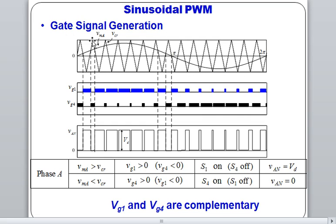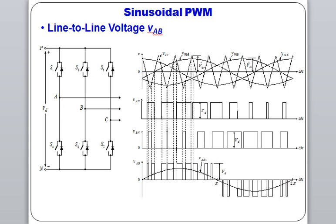For a particular leg, suppose leg 1, there are thyristors: thyristor 1 and thyristor 4, and their gating signals are complementary. We can relate this to phase A, giving VAN. Similarly for phase B and phase C, we trigger the appropriate gate signals to the appropriate thyristors. Phase A uses S1 and S4, phase B uses S3 and S6, and phase C uses S5 and S2. VAB is obtained as VAN minus VBN — this is the way to analyze the line voltage.